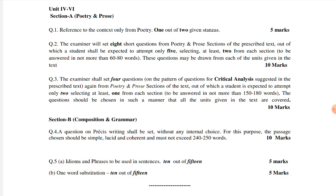Question number 3: The examiner shall set 4 questions on the pattern of questions for critical analysis suggested in the prescribed text, again from poetry and prose sections of the text, out of which a student is expected to attempt only 2, selecting at least 1 from each section, to be answered in not more than 150 to 180 words. The question should be chosen in such a manner that all the units given in the text are covered.